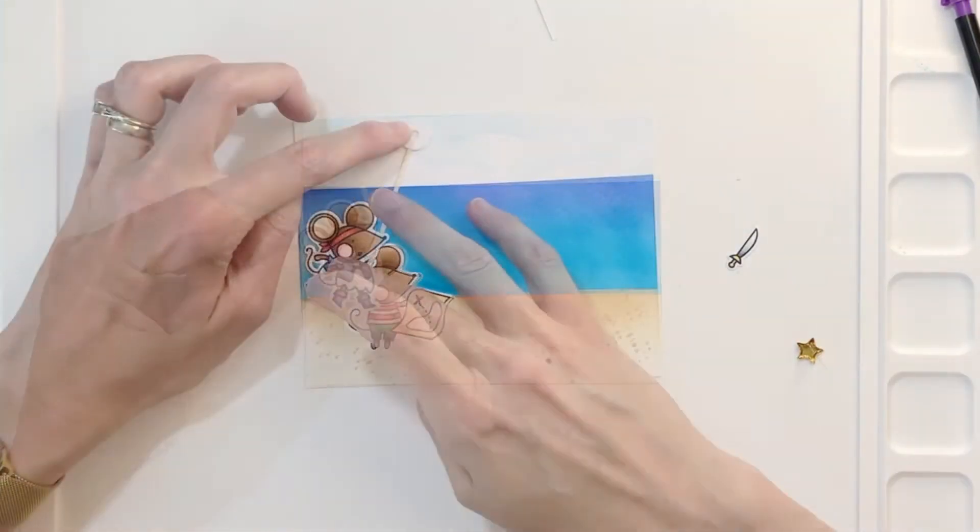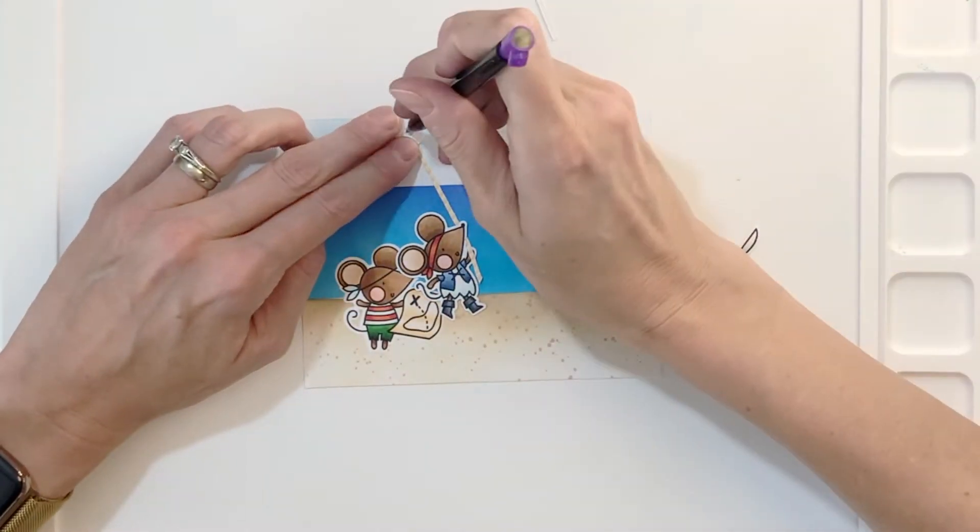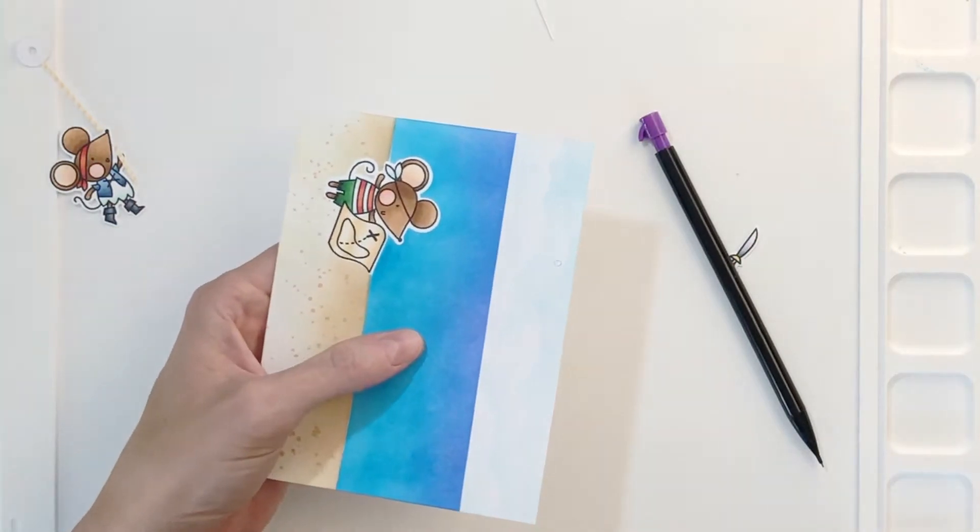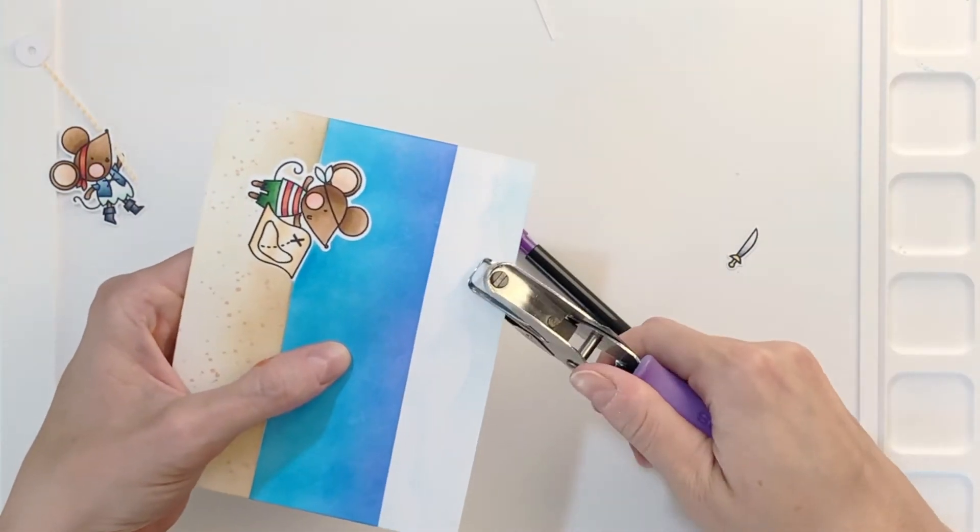Now I need to make the hole for the brad on my background panel. So I'm positioning the mouse where I want it to go, take my pencil, trace out that little center opening on my donut piece, and then I'll use my hole punch here to punch that hole out.